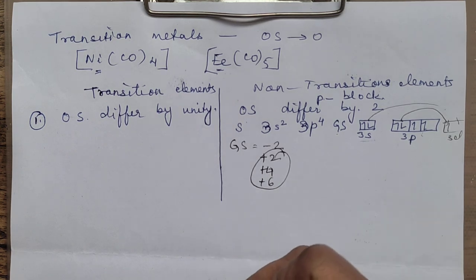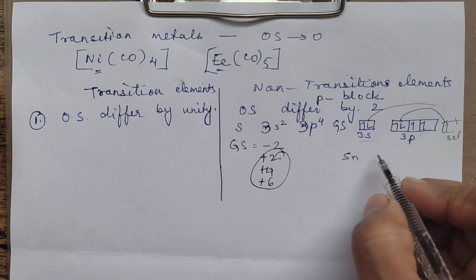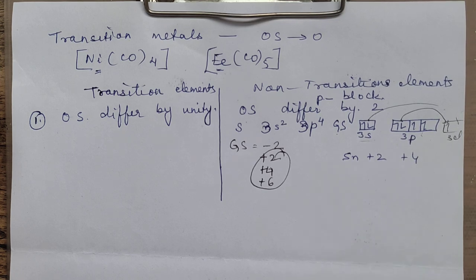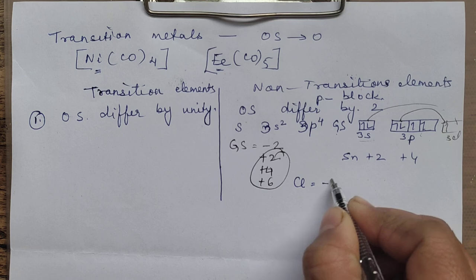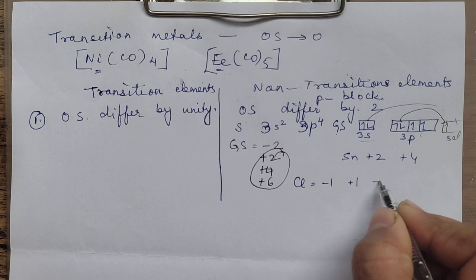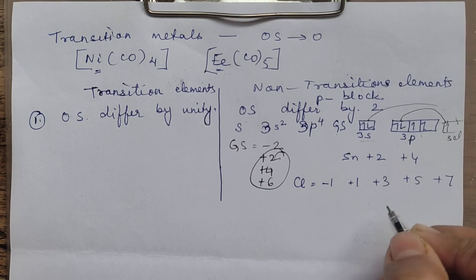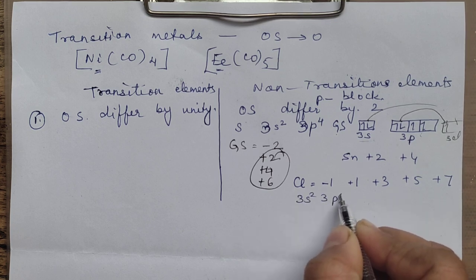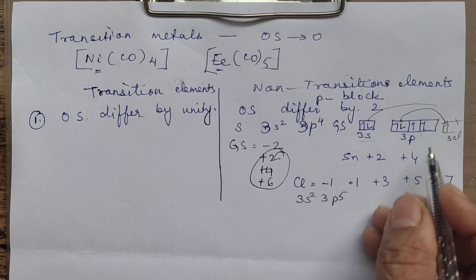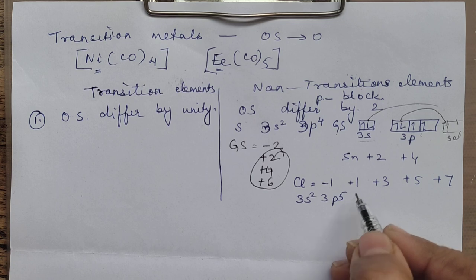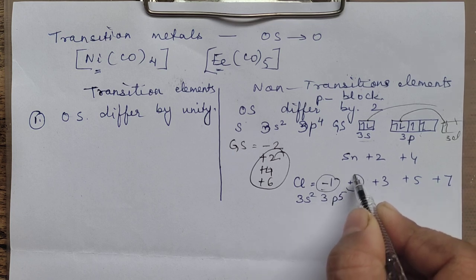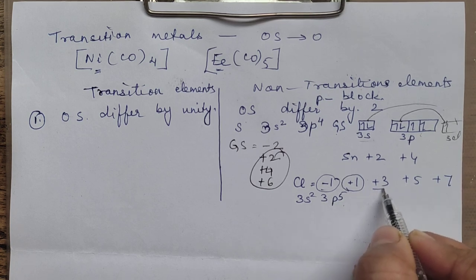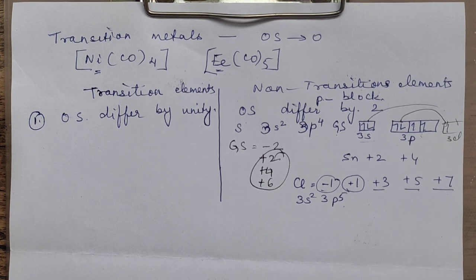Another example: tin exhibits 2 common oxidation states — 2 and 4 — differing by 2. Another example: chlorine can exhibit minus 1, +1, then +3, +5, and +7. Configuration of chlorine is 3s2 3p5, meaning 1 unpaired. By gaining 1 electron it shows minus 1; in the ground state +1; first excited state gives 3 unpaired so +3; second excited state +5; third excited state +7. These oxidation states all differ by 2.